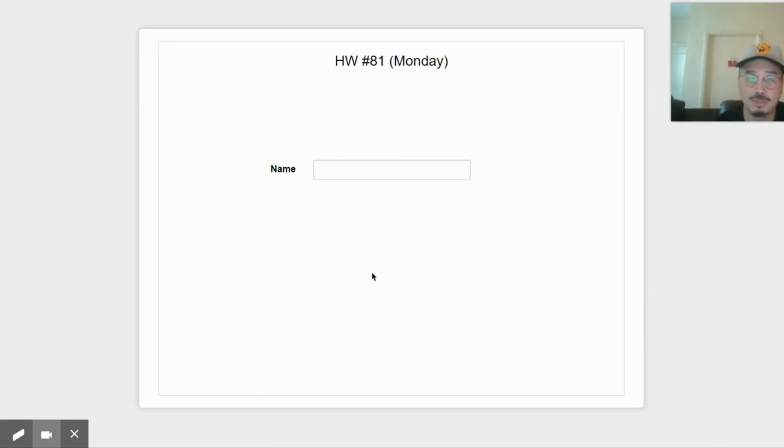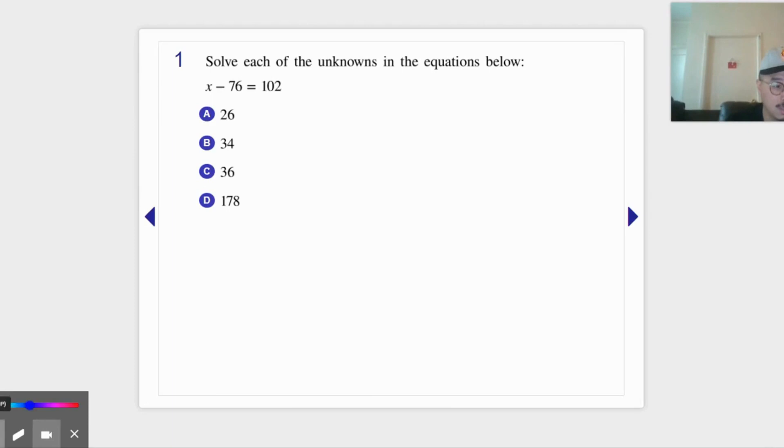Alright, homework time. I'm gonna enter in my name. We'll do these questions together. Question one. You have to do this. So here we got x plus 76 equals 102.